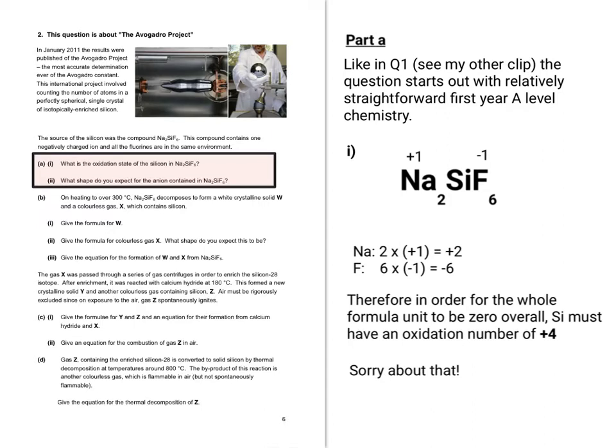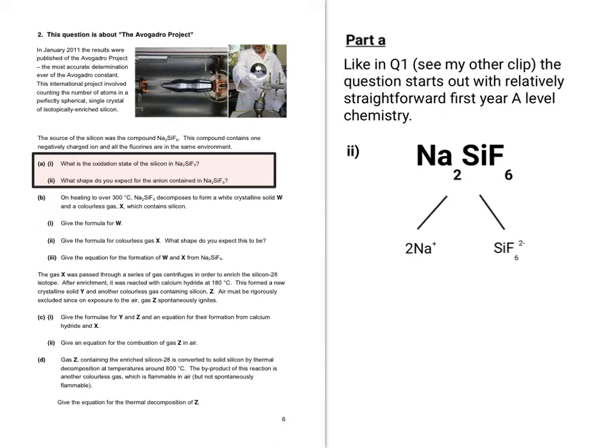Let's now move on to part II. The next question asked us to consider the shape you'd expect for the anion contained in Na₂SiF₆. The anion is obviously the negatively charged ion, as you remember from GCSE days. In the SiF₆²⁻ anion, you have one central atom and six atoms bonded to it, so it will be octahedral.